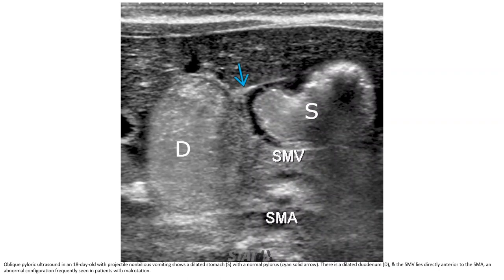Pyloric ultrasound in an 18-day-old with projectile non-bilious vomiting shows a dilated duodenum, with the SMV lying directly anterior to the SMA — an abnormal configuration frequently seen in patients with malrotation.